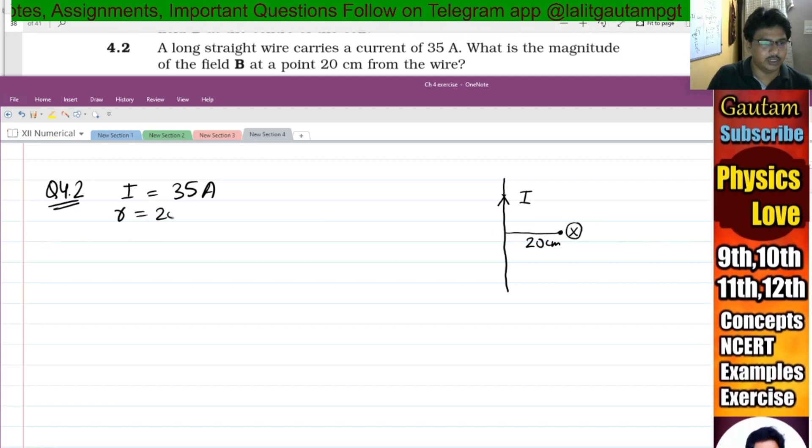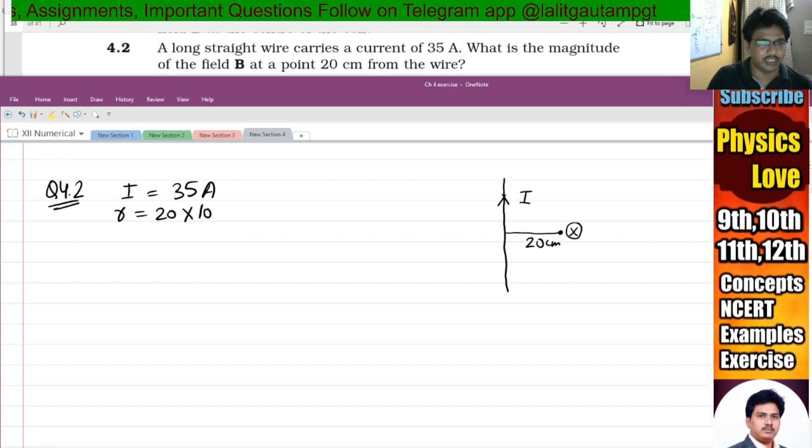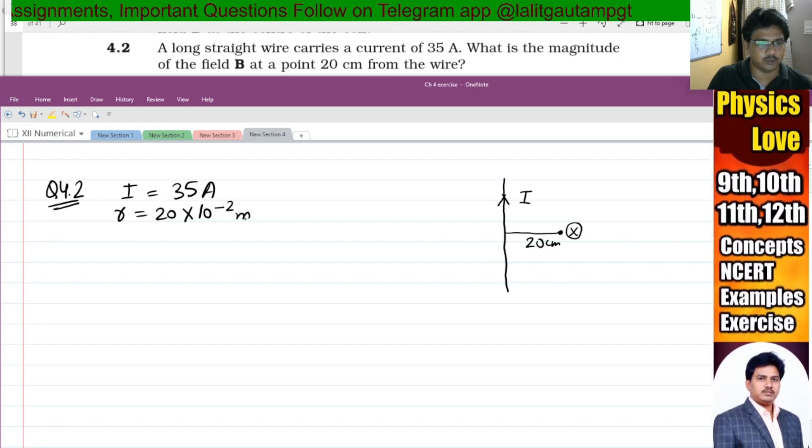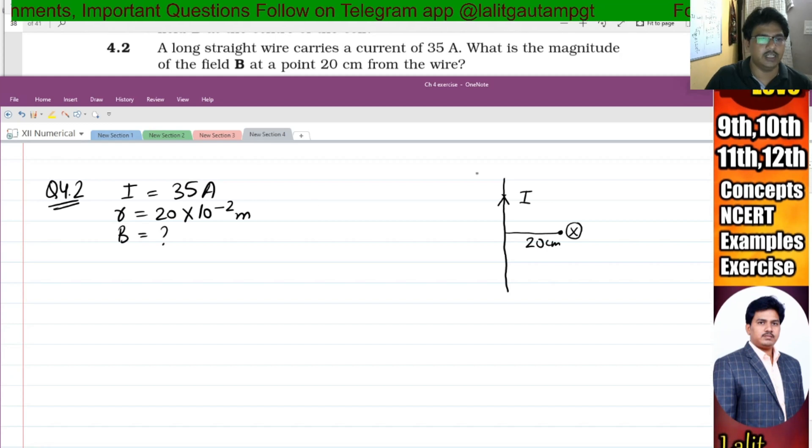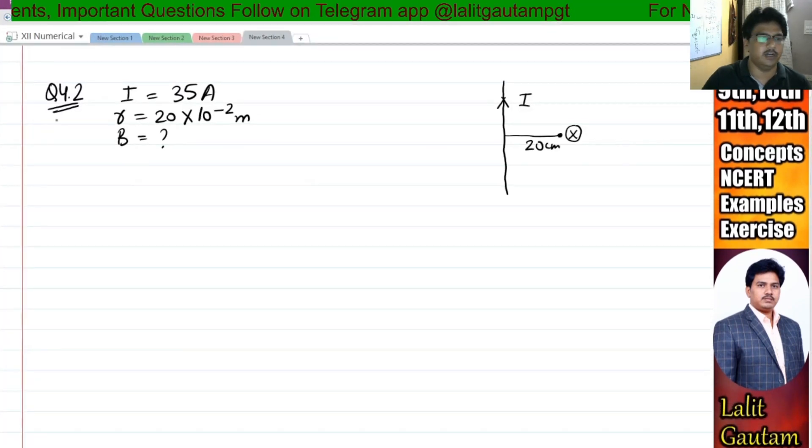r is 20 centimeter. We convert it to meters, that is 20 into 10 to the power minus 2 meter, and we have to calculate the magnitude of magnetic field B.